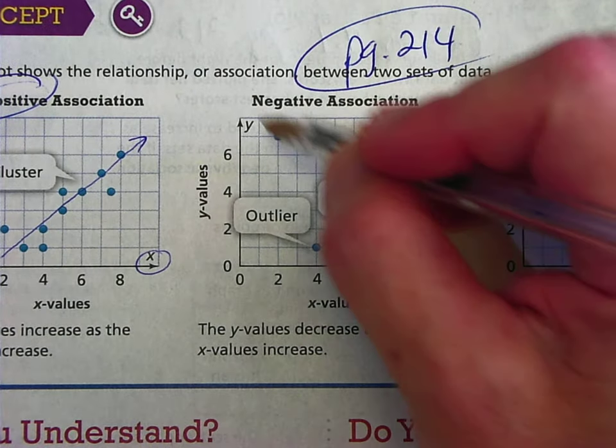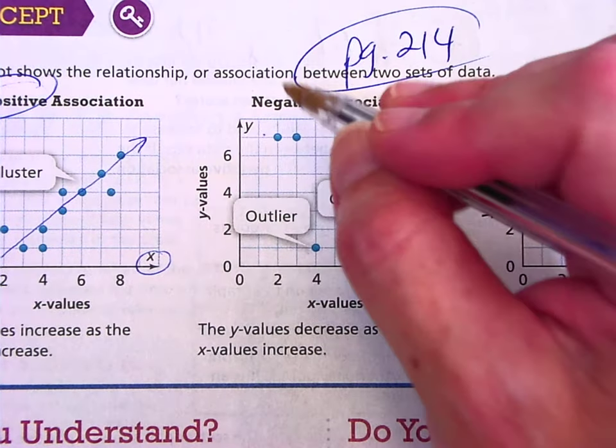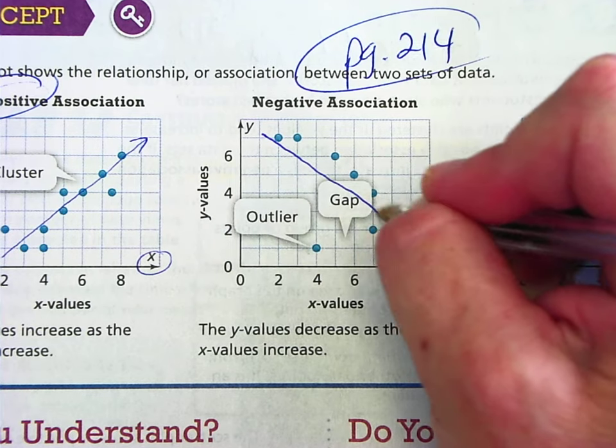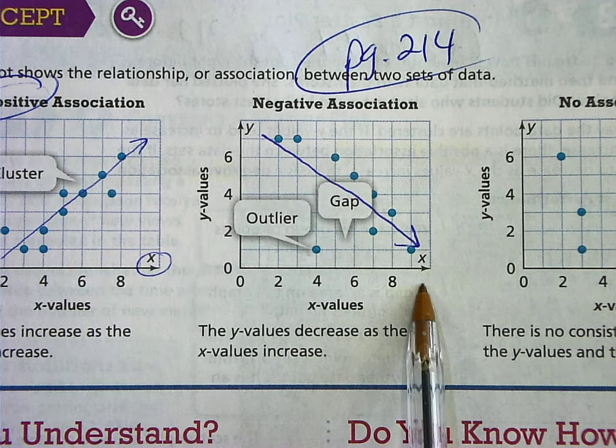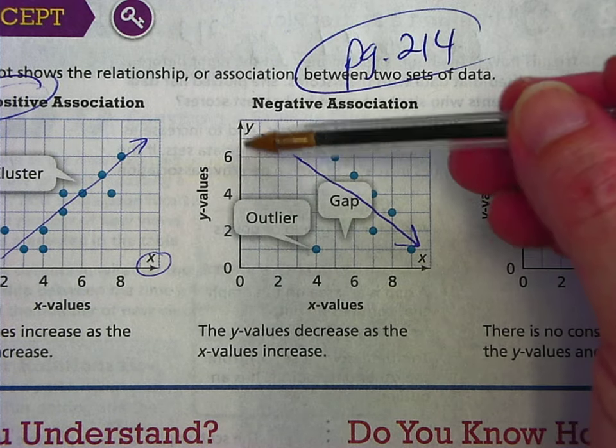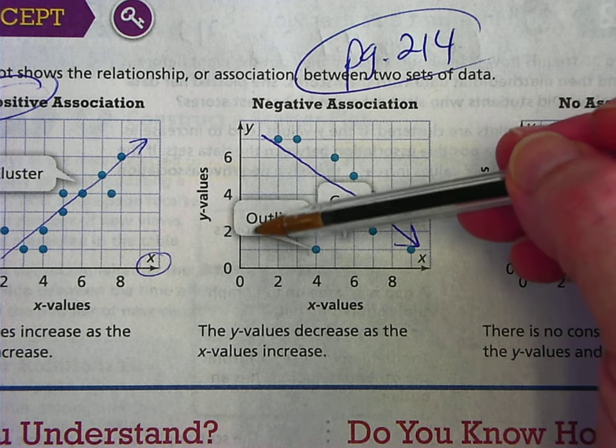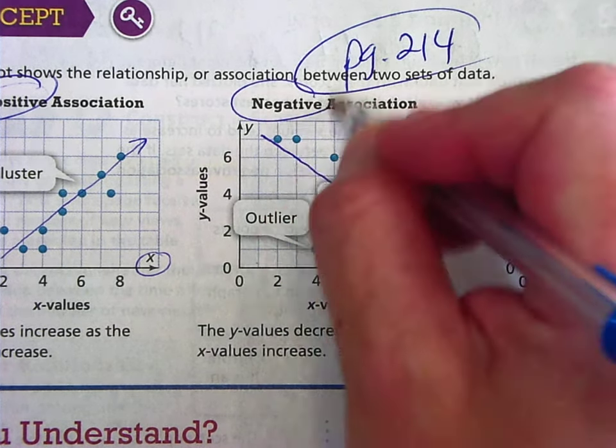Okay, so now a negative association from left to right. If you follow these dots from the left side to the right side, generally, they're moving down. The X values are still increasing as you move left to right, but the Y values are going down. So we call that a negative association.